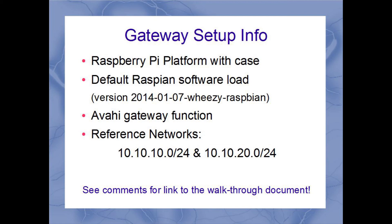So to help make this example make sense, let's tell you what we're working with here. We've got a Raspberry Pi platform with a case. We've got a default Raspbian software load on there with the version indicated. We have the AVAHI gateway software installed. Then we have a couple of networks defined — the 10.10.10 network and the 10.10.20 network.